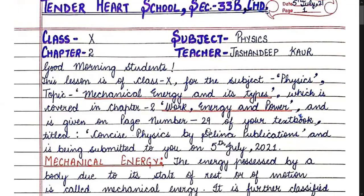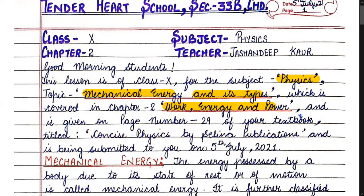Good morning, students. This lesson is for class 10th, subject physics, topic: mechanical energy and its types, covered in chapter two — work, energy and power — on page number 29 of your textbook Concise Physics by Selina Publications, being submitted on 5th July 2021.